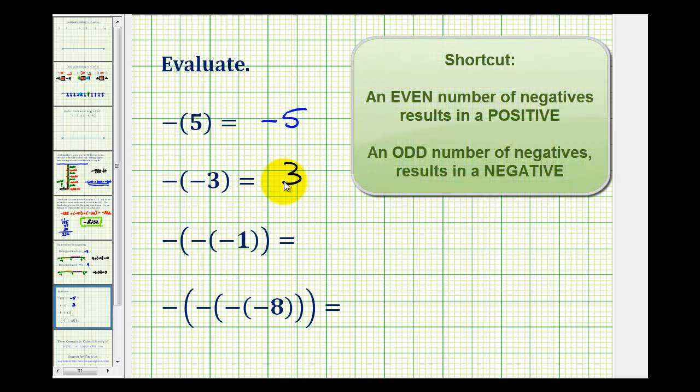At this point, what we'll notice is if there's an even number of negatives, the result will be positive. And if there's an odd number of negatives, the result will be negative.